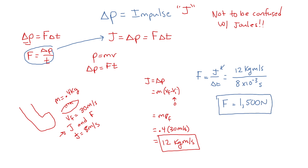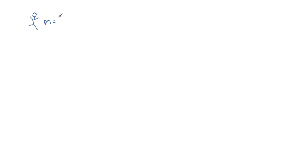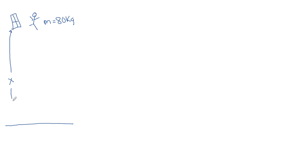I want to do one more example that's a little trickier. A stuntman with a mass of 80 kilograms jumps out of a window located at a displacement delta y equal to 45 meters above the ground. Part a: how fast is he going when he hits the ground?